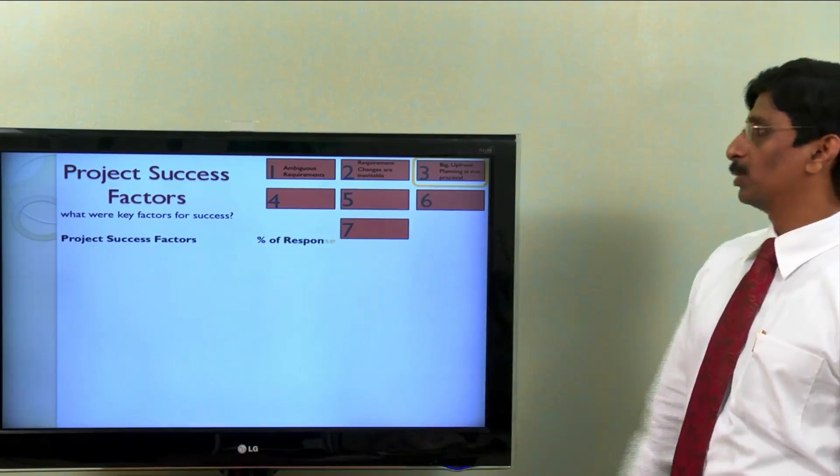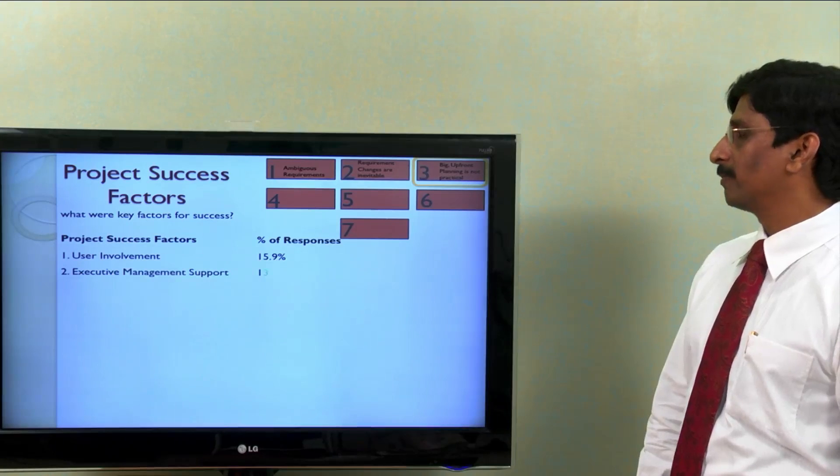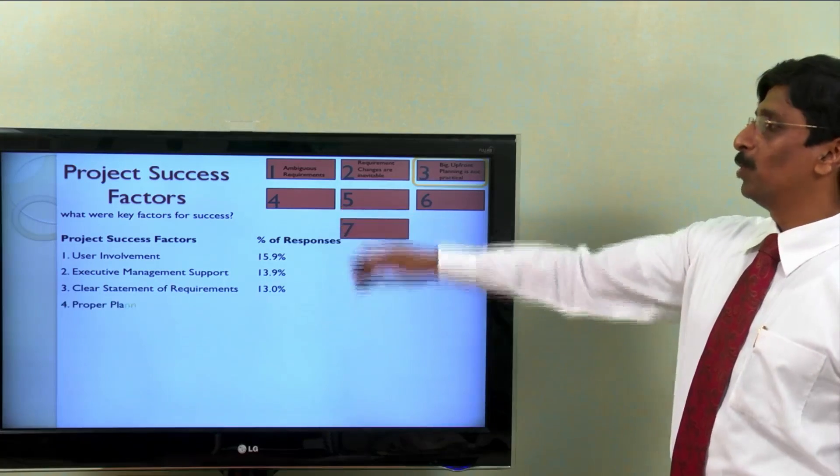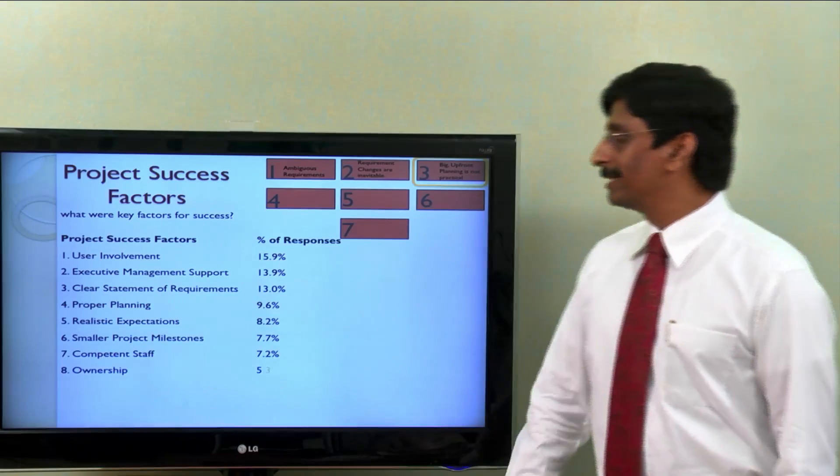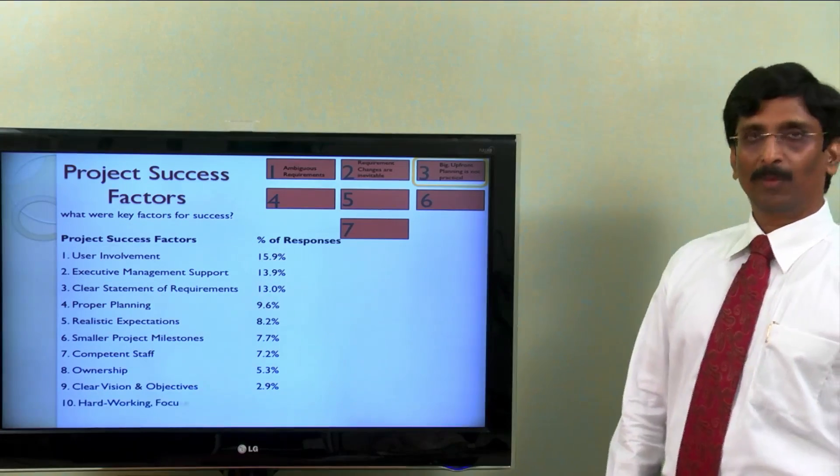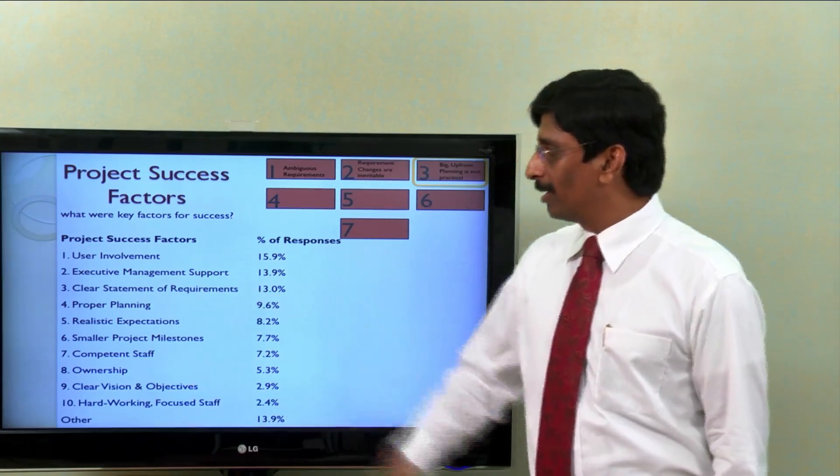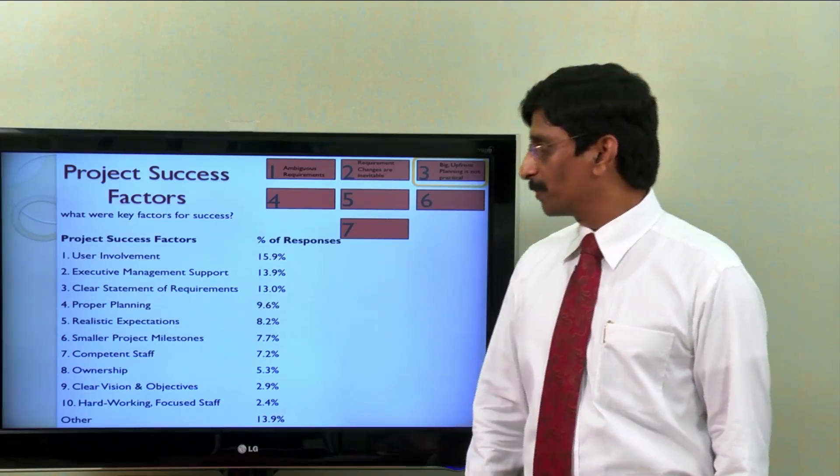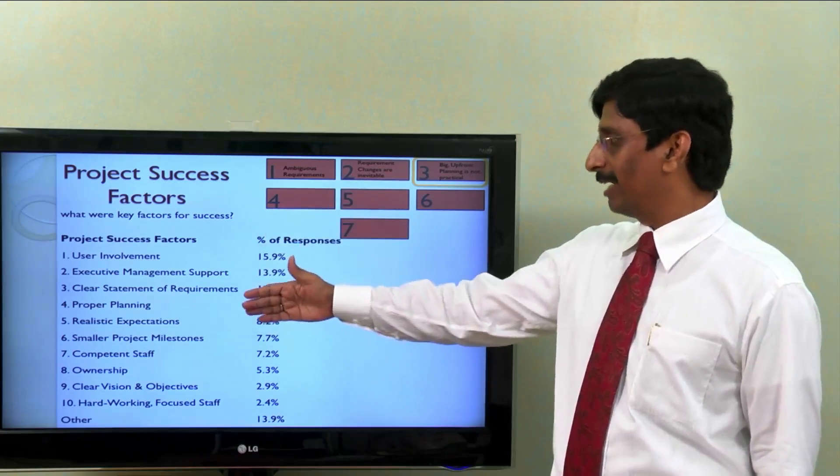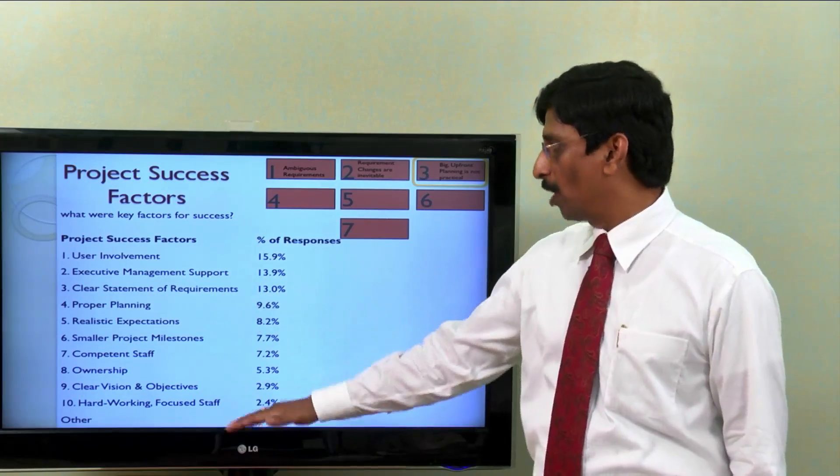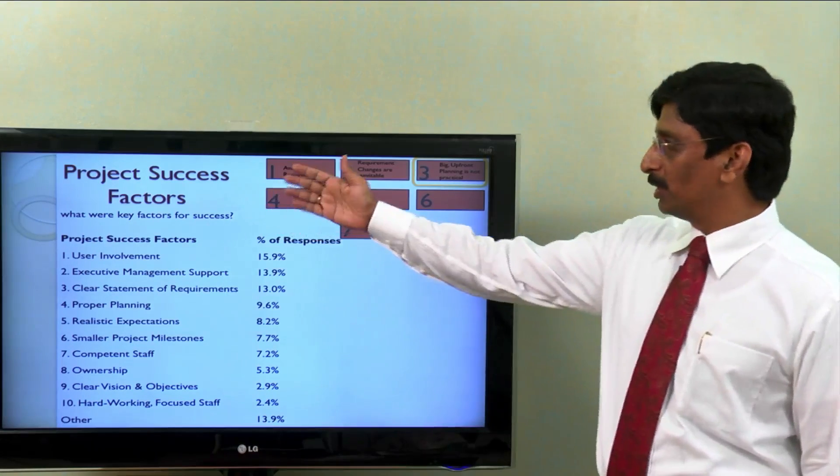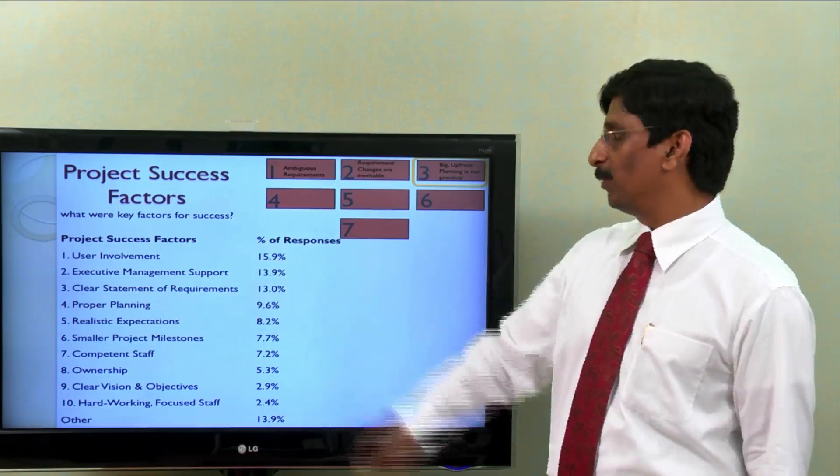As per Standish Group report, the first and foremost is user involvement throughout the life cycle. Second: executive management support. Third: clear statement of requirements. Planning comes slightly later, along with realistic expectations, and the list goes on. But the topmost one is user involvement and executive management support.